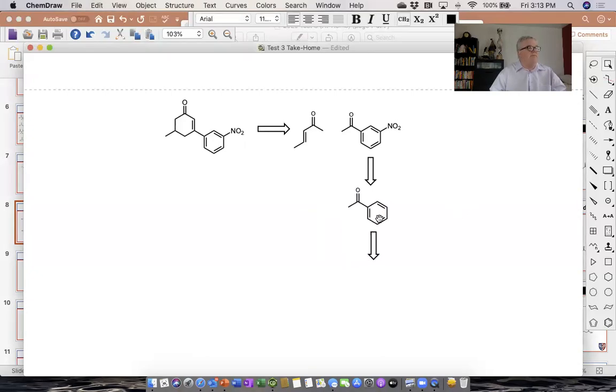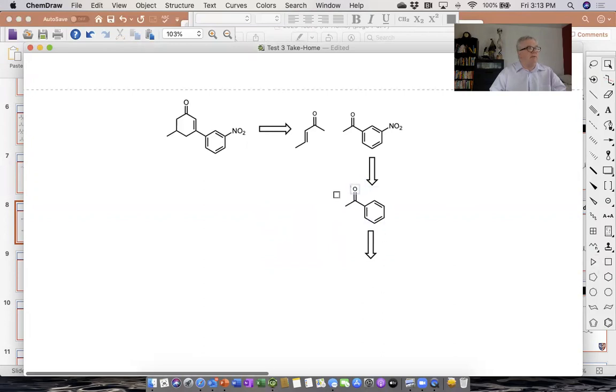We have to put that one on first because if we put the nitro group on first, we wouldn't be able to do the acylation. Remember Friedel-Crafts reactions will not go when we have strongly electron withdrawing groups already on the ring. So if we put the nitro group on there first, we wouldn't have been able to do this.